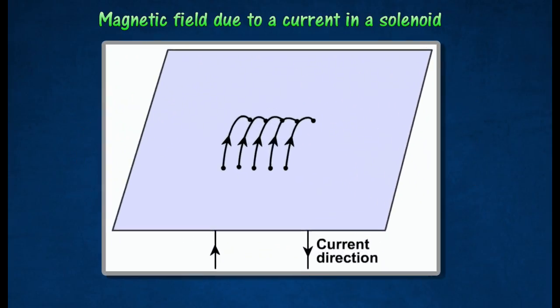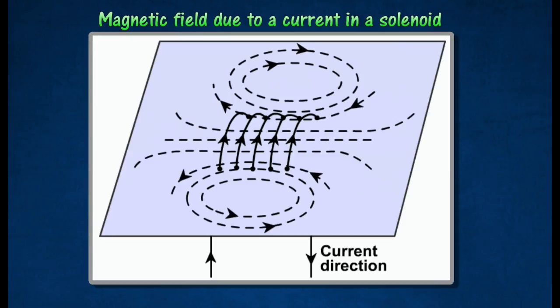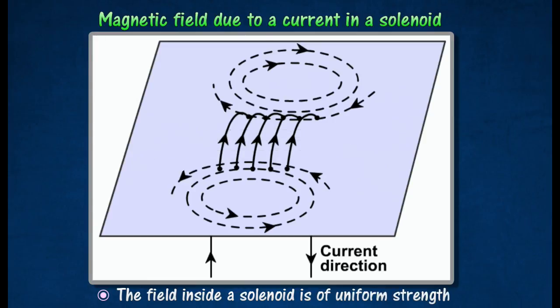The figure shows the magnetic field pattern produced by a solenoid. The field lines inside a solenoid are straight and evenly spaced, indicating that the field is of uniform strength.